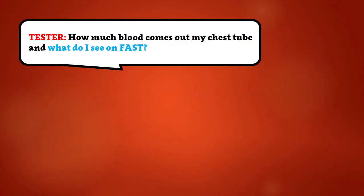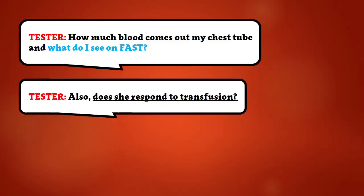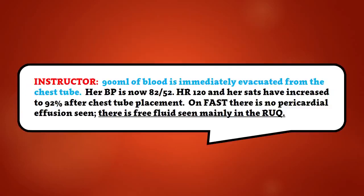How much blood comes out of my chest tube and what do I see on FAST? Does she respond to transfusion? 900 milliliters of blood is immediately evacuated from the chest tube. Her blood pressure is now 82 over 52, heart rate is 120, and her SATs have increased to 92% after chest tube placement.